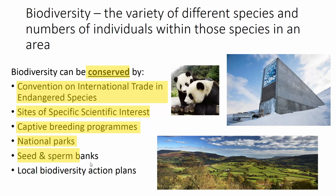Then there are seeds and sperm banks, so that we can reproduce animals or plants in the future even if they go extinct. One of the most famous is Svalbard in Norway — the international seed bank for the world. All sorts of seeds are held there and you can actually send your own samples to be stored. I'll link a video below by another YouTuber that goes into this in more detail if you're interested.